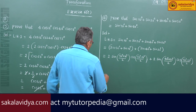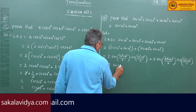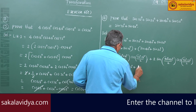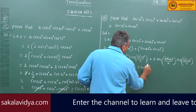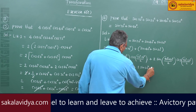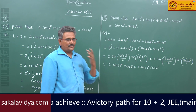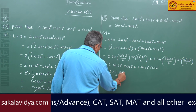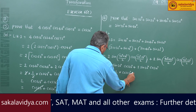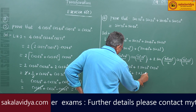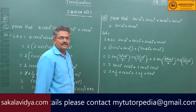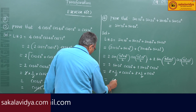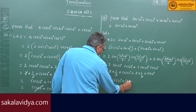Now this is 2·sin30·cos20 degrees plus 2·sin30·cos10 degrees. Since sin30 equals 1/2, this becomes 2 into 1/2 into cos20 plus 2 into 1/2 into cos10 degrees. The 2's get cancelled, giving cos20 degrees plus cos10 degrees.